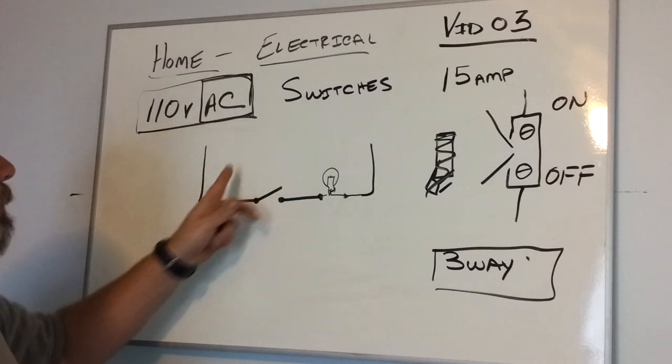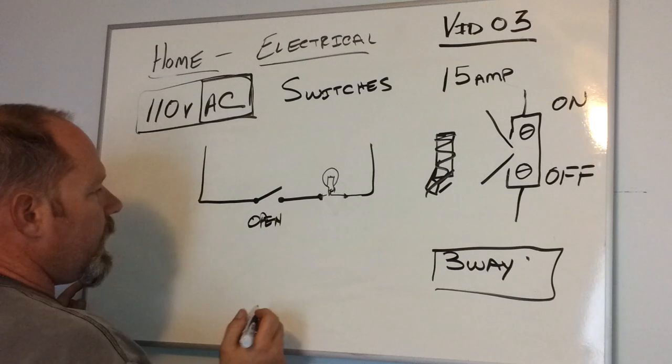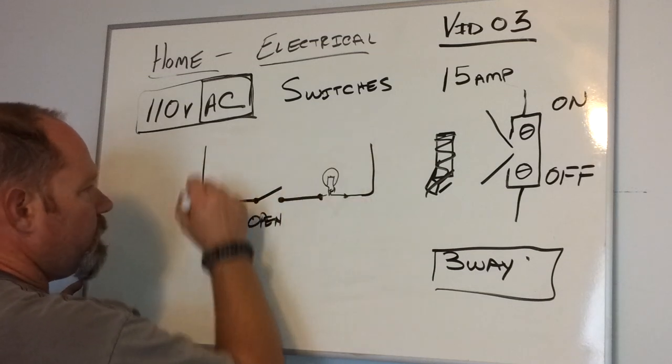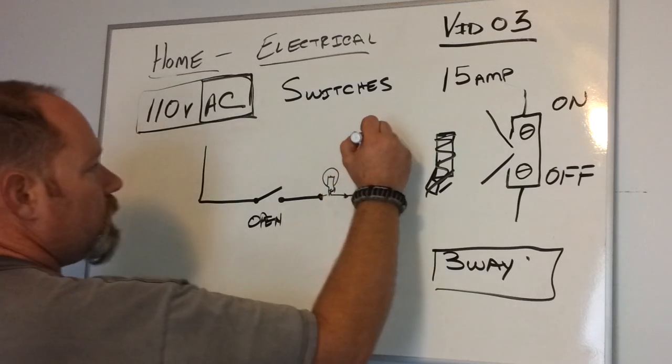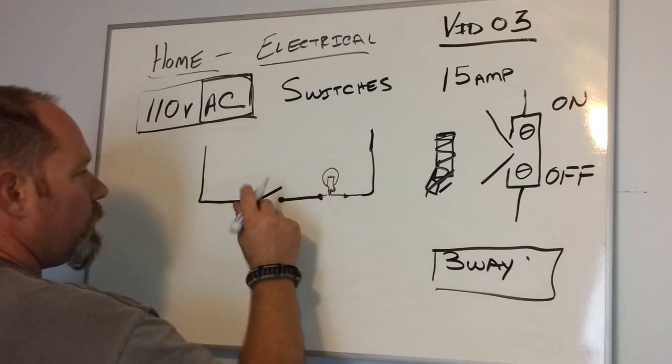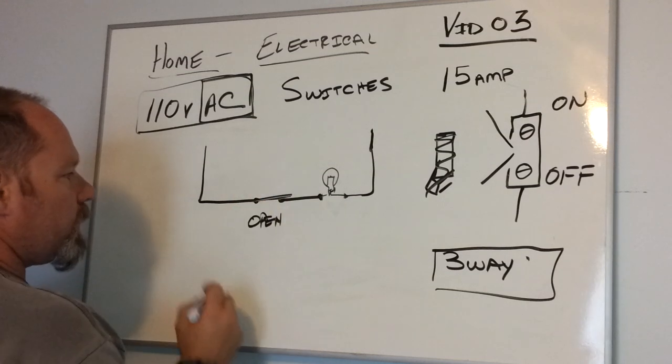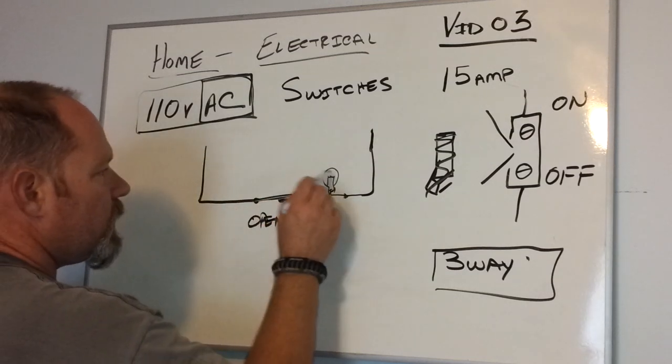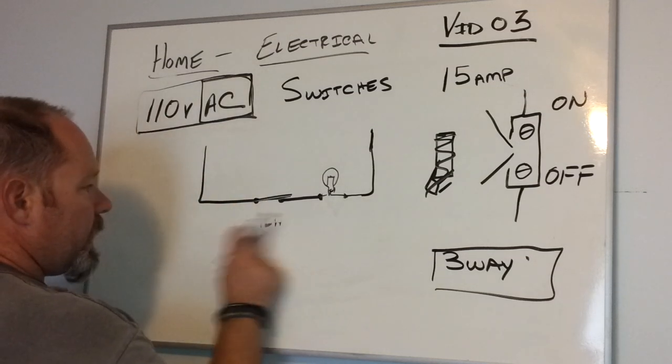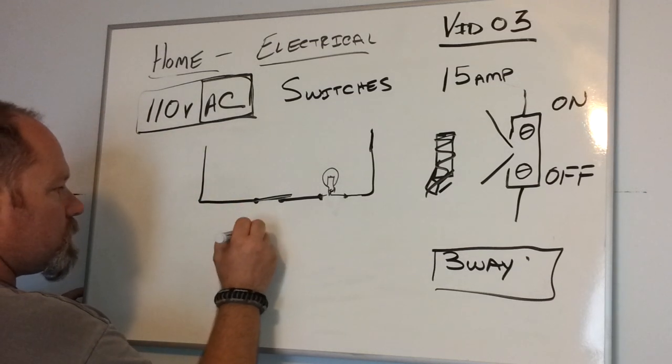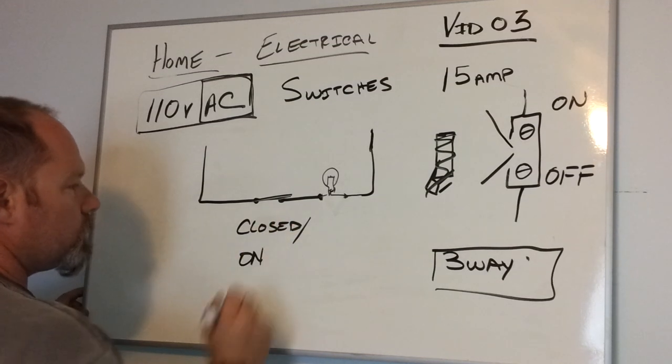In the open position, this switch here is currently in the open position, and no electricity can flow through this wire. Absolutely nothing's going to happen there. When you close the switch, that would look like this. Now the electricity can pass through, energize, and head on back. When that switch is in this position, that's called closed or on.